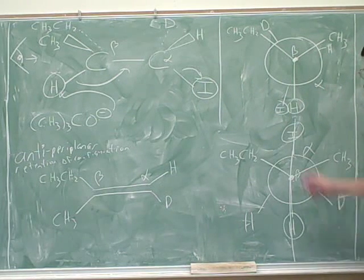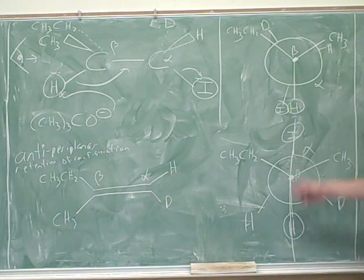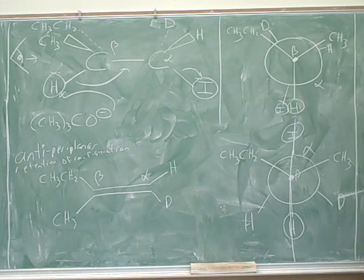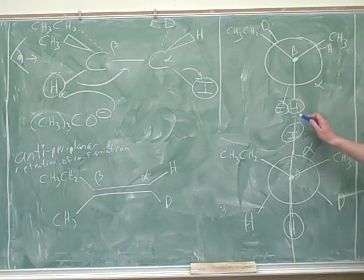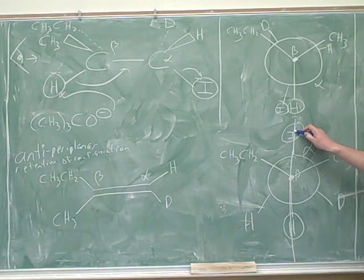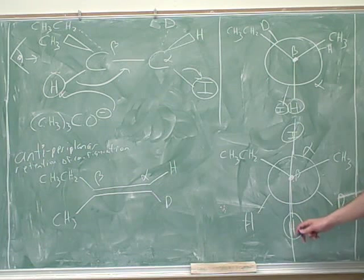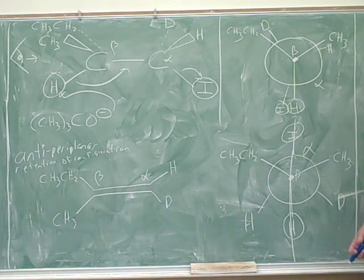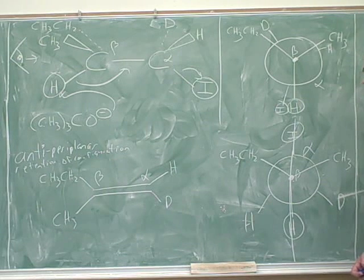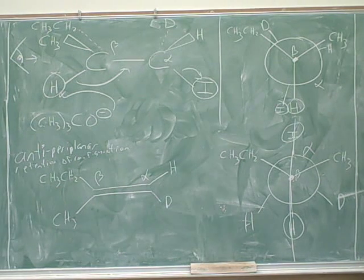All right. So we said to rotate until these were anti. Again, it helps to have them circled so you can see they're anti. And then it's still very easy to get confused here. You should actually probably draw this line through the leaving group and the beta hydrogen so you can clearly see which substituents are on the same side of the line and which substituents are on opposite sides of the line. So all these little notational tricks that I used here can be really helpful to you when you're doing a problem like this.